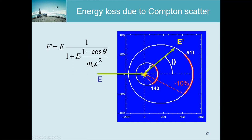For PET the expression simplifies because m_e c² equals 511 keV and the PET photons also have 511 keV, so those two factors cancel. For 180-degree deflection the denominator becomes two, meaning one-third of the energy is retained. This is visible in the plot: the distribution is very asymmetrical for 511 keV photons - at zero deflection we have 511 keV, at maximum deflection only one-third remains.